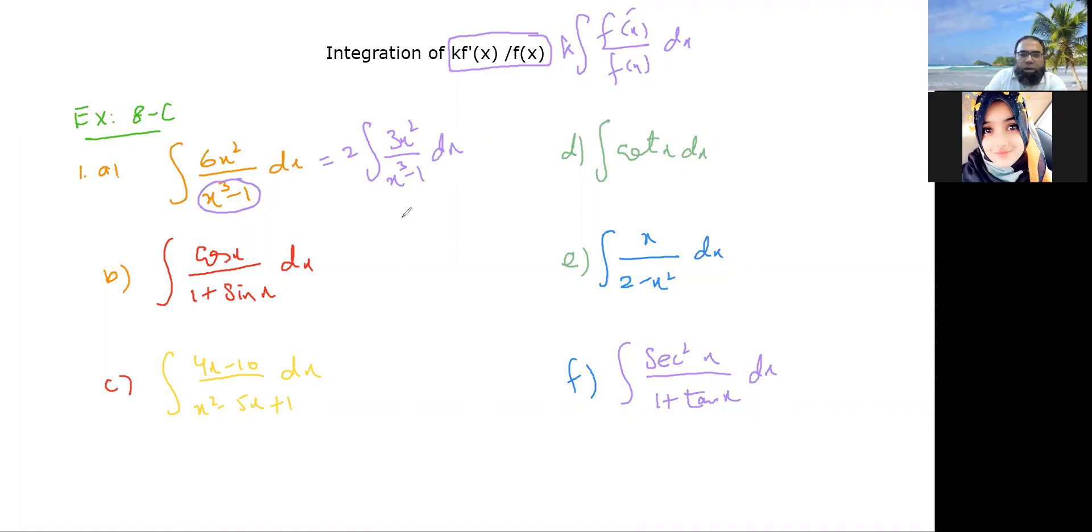And if you look at this one here, this is cos x over one plus sine x. So you see that one plus sine x derivative is cos x, so this is satisfying this condition over here. Similarly, x squared minus 5x plus one's derivative is 2x minus 5. So you can write it as 2 into 2x minus 5 over x squared minus 5x plus one dx.